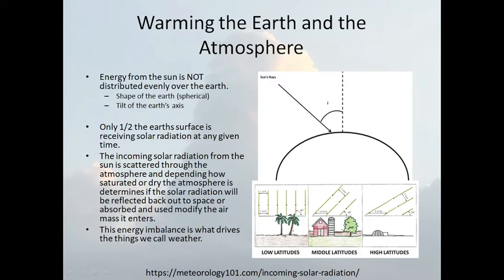Warming of the earth and the atmosphere. Energy from the sun — sun rays come in, and they are not evenly distributed over the earth. The shape of the earth is a sphere, so when the sun hits the sphere, it scatters out. It's stronger at the equator, a more direct hit, and then hits at an angle at the mid-latitudes, and at an even greater slope at the higher latitudes. That's why it's colder in the north, colder at the south pole, and hotter at the equator.